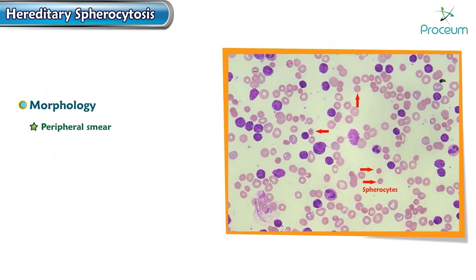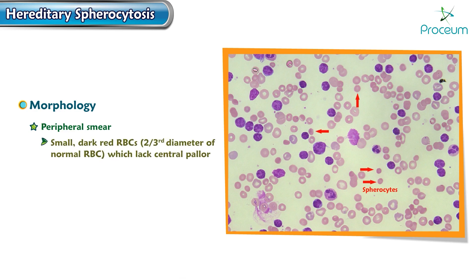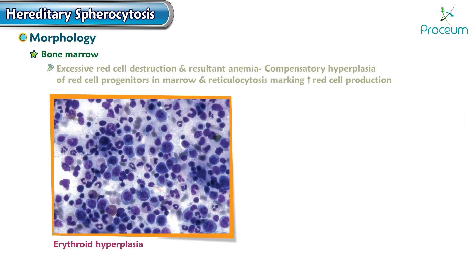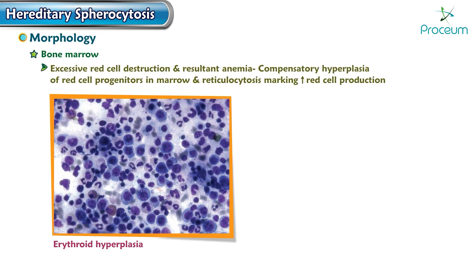Regarding morphology, the peripheral smear shows spherocytes, which are small dark red blood cells that are two-thirds the diameter of normal RBCs and lack the central pallor. The bone marrow shows excessive red blood cell destruction and resultant anemia leading to compensatory hyperplasia of red cell progenitors and reticulocytosis, marking increased red blood cell production.